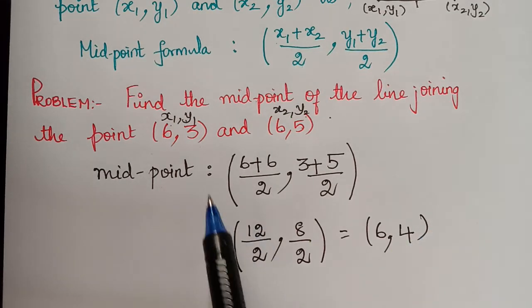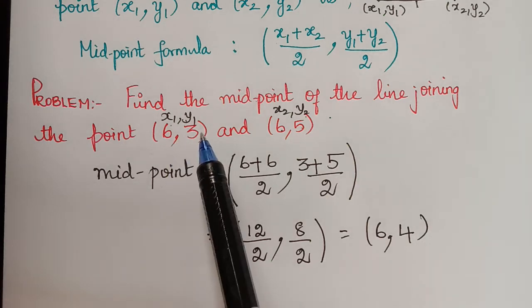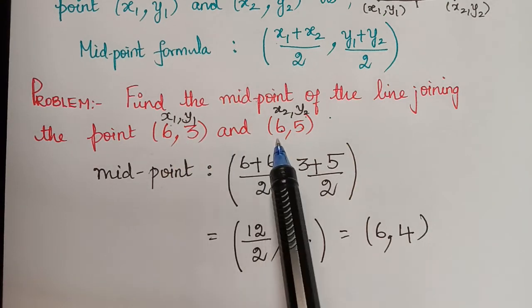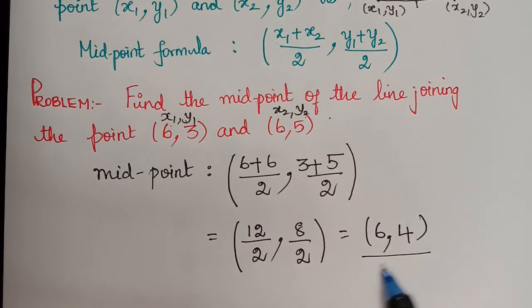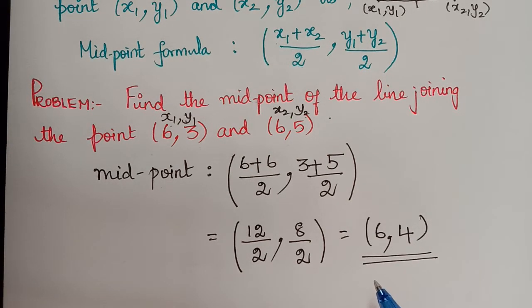So therefore the midpoint of the line joining the point 6 comma 3 and 6 comma 5 is given by 6 comma 4. Hope you have understood the concept of midpoint. In our next video we shall be learning about the centroid of a triangle. Thank you.